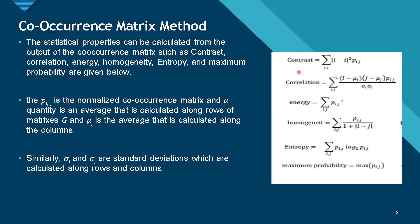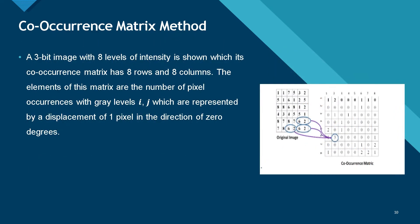Here, we can see contrast equation and all other properties equation based on the correlation matrix, where P(i,j) is the co-occurrence matrix. The P(i,j) is the normalized co-occurrence matrix, and U(i,j) is the average that is calculated along the row matrix. Similarly, we will have sigma i and sigma j as standard deviations calculated along the rows and columns respectively. And co-occurrence matrix method, this is the example for it.